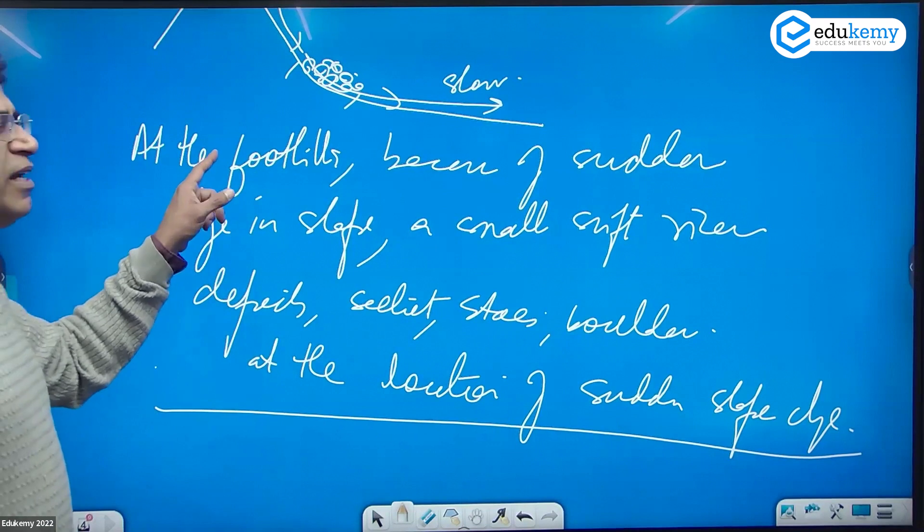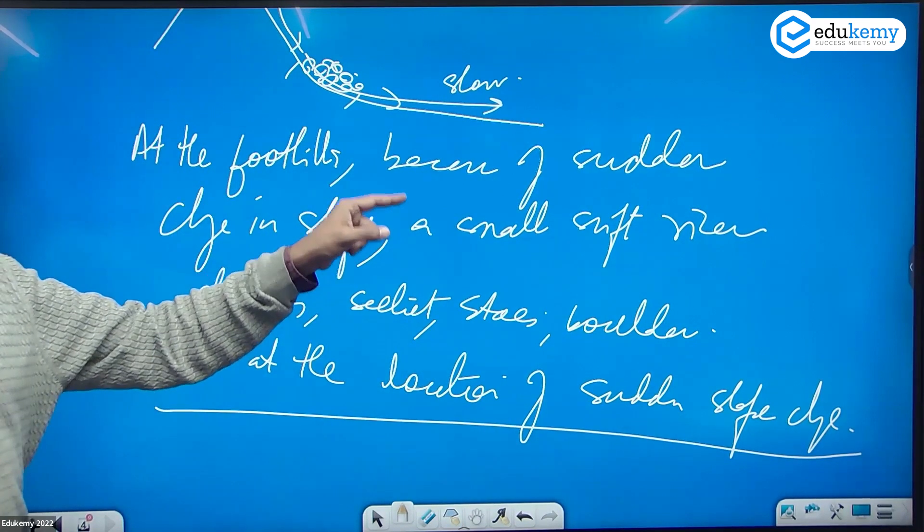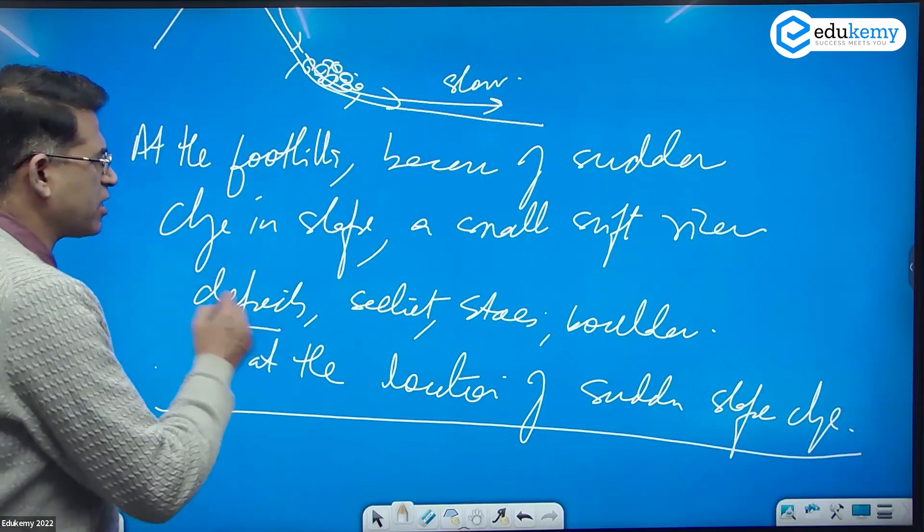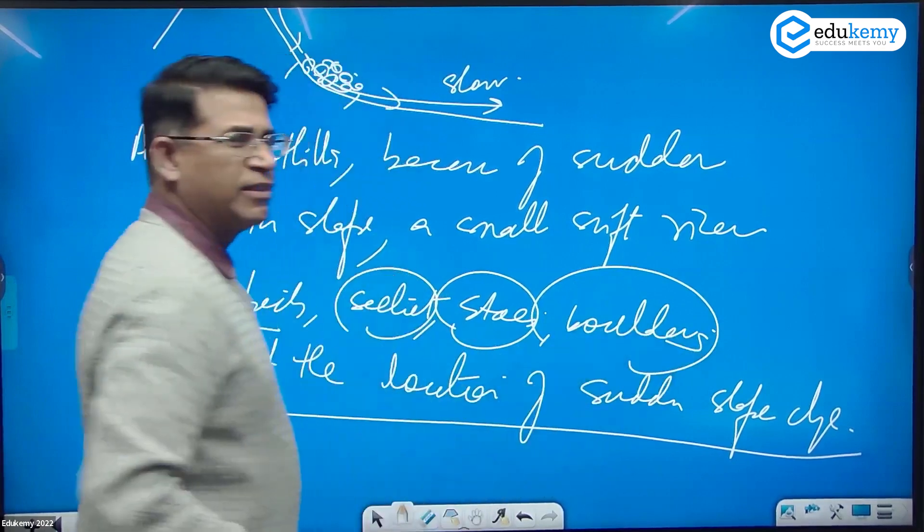So where the foothills are, because there is sudden change of slope, a small swift river deposits sediments, stones, and boulders.